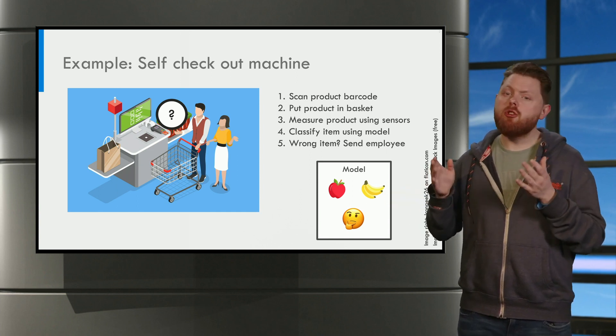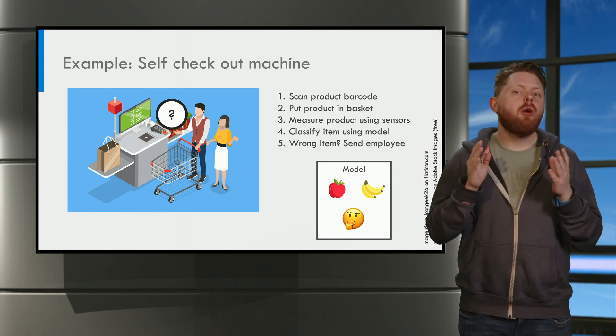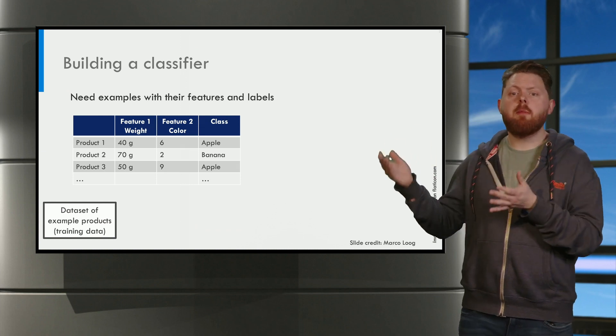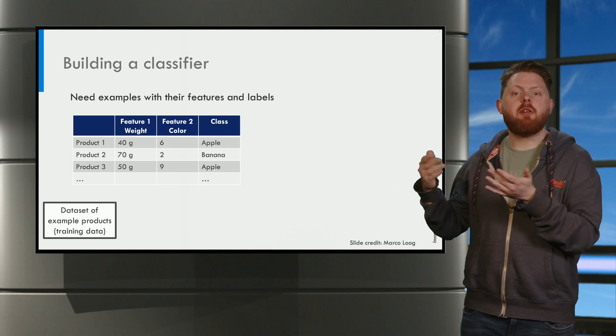How do we make such a classification model? First, you need examples. You need some apples, you need some bananas, etc. And you measure their features.